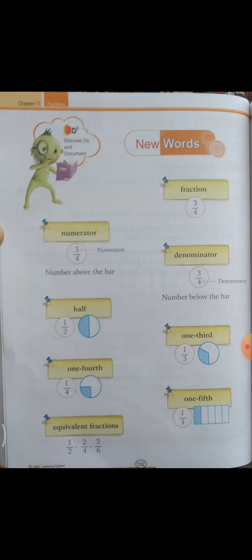Ab dekhte hain — 1 by 2 jaise de rakha hai, half. Toh half part iske andar shade hai. Waise one third toh one part — teen mein se ek part shade hai. Aur equivalent fraction kya hota hai? Ab jaise 1 by 2, 2 by 4, 3 by 6 — these are the equivalent fractions.